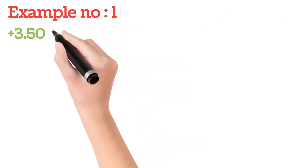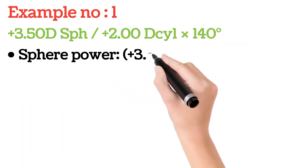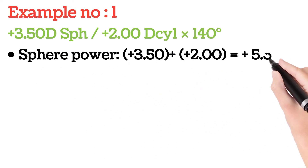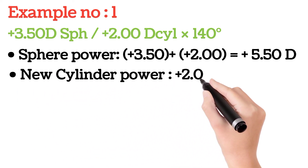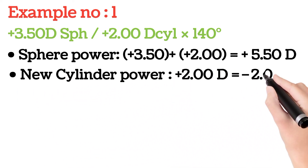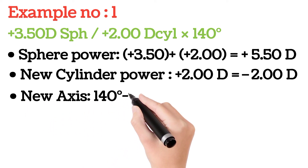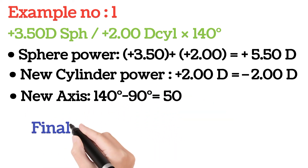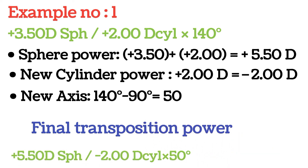Here are examples of transposition. You can see how to calculate transposition using the three basic rules: first, add sphere to cylindrical; second, change the sign of the cylindrical; third, change the axis by 90. The final power in example one is +5.50 diopters spherical and -2.00 diopters cylindrical at 50 degrees.